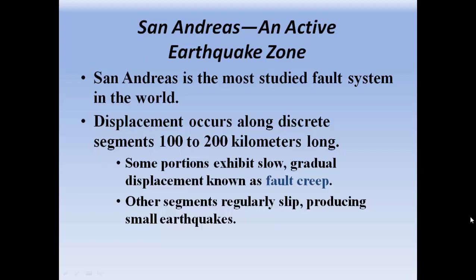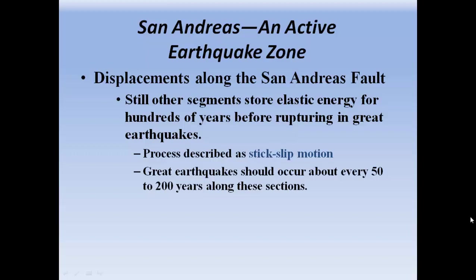San Andreas is an active earthquake zone. San Andreas is the most studied fault system in the world — it's in California. Displacement occurs among discrete segments 100 to 200 kilometers long. Some portions exhibit slow, gradual displacement called fault creep. Other segments regularly slip, producing small earthquakes. Still other segments store elastic energy for hundreds of years before rupturing in great earthquakes. This process is described as stick-slip motion.